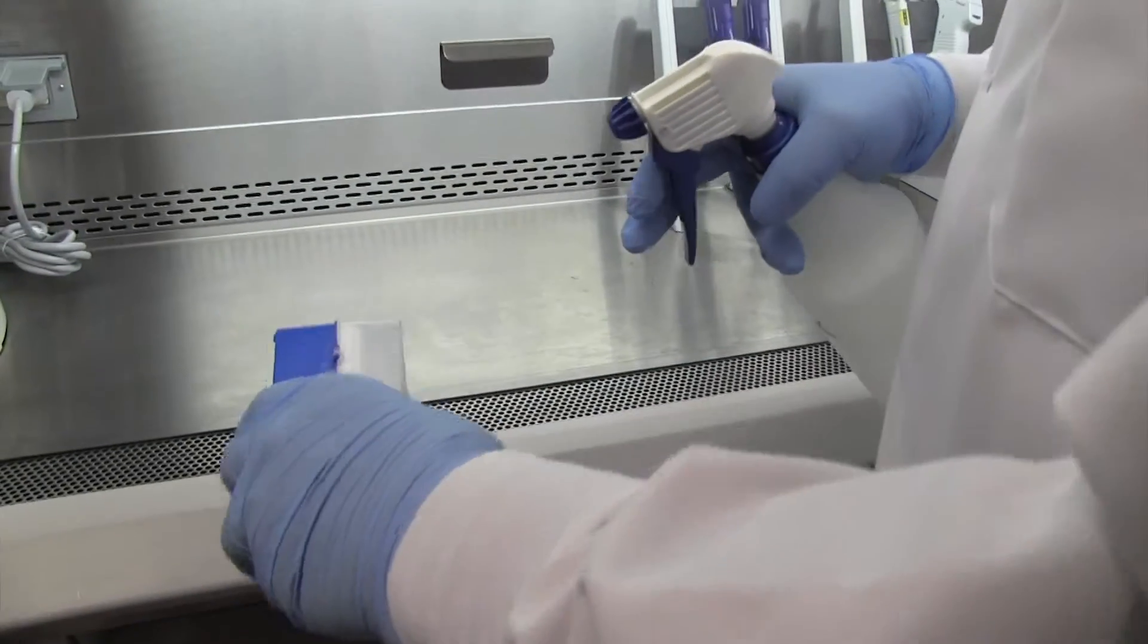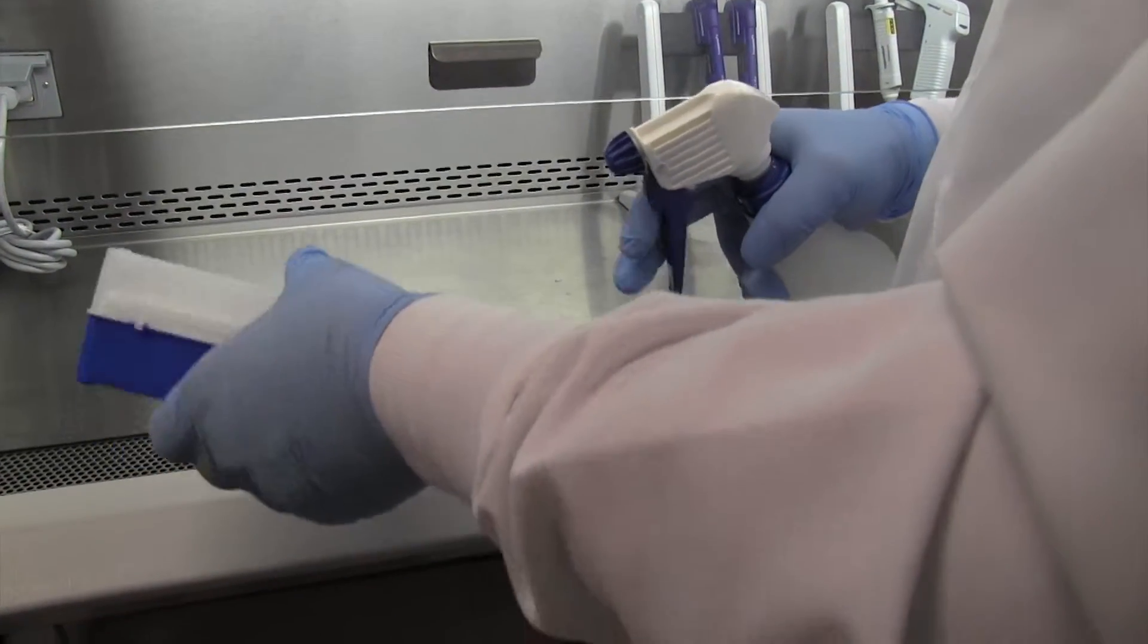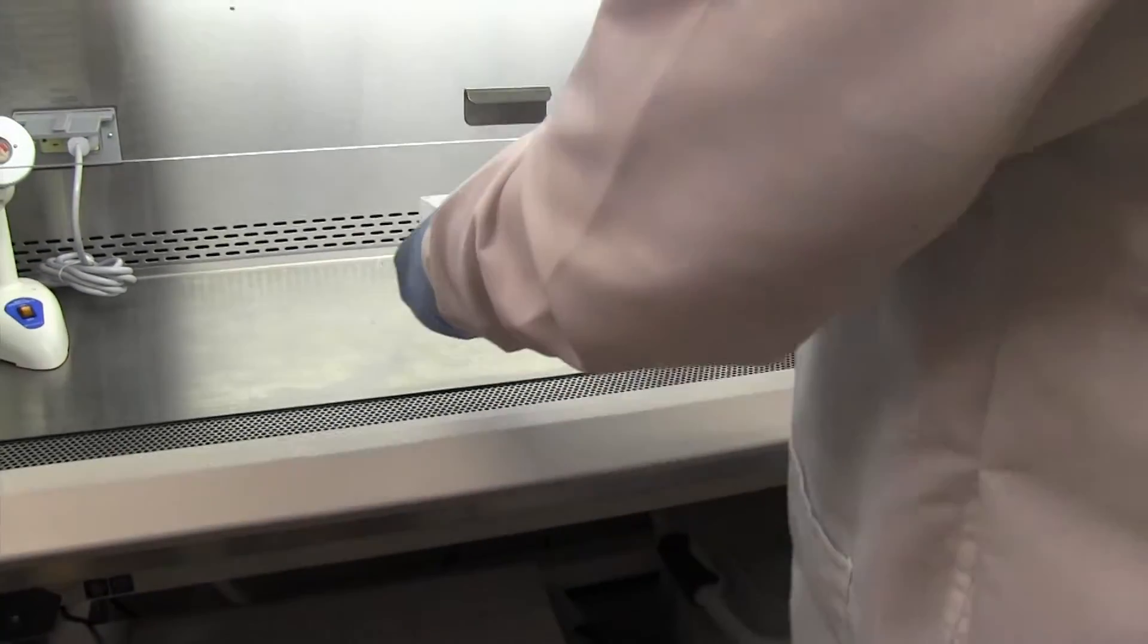Disinfect items before placing in the cabinet. Place items as far back as practical, at least 4 inches behind the front grill.